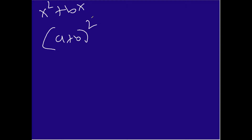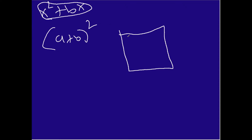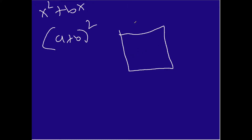Why do we call it completing the square? Well, as you know, a square has the same length and the same width. What we're trying to figure out is basically the area of the square — we know the area and we want to figure out what's the length and the width. That's kind of what's happening. To stop making this abstract, let's go ahead and get started with an example.